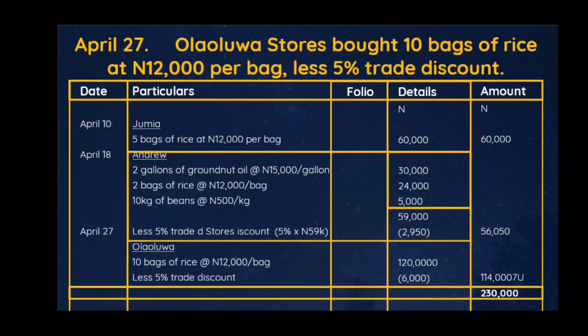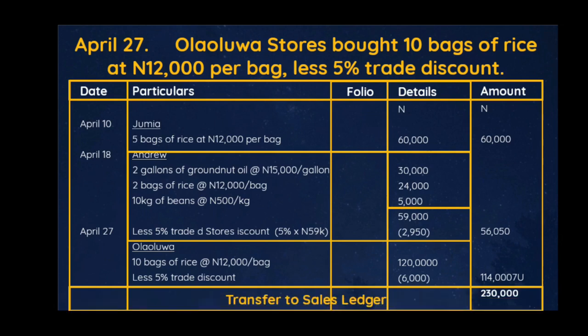As there are no other entries, we add everything together. The grand total is 230,000 naira. This means at the end of the month of April, the total amount of credit sales by the business is 230,000 naira. Based on that: Jumia is owing us 60,000 naira, Andrew is owing us 56,050 naira, and Ololua is owing us 114,000 naira.